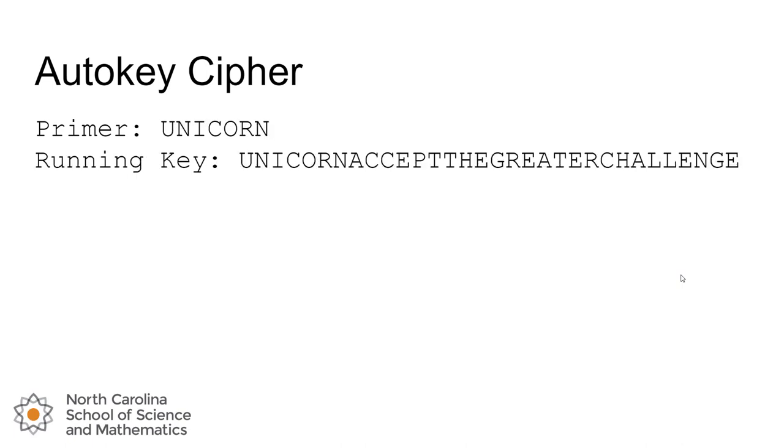We start by taking our primer, and the way that we create our running key is by taking the primer and putting the plaintext on the end. If you're creating the message, you have access to both pieces of information: the primer, which is an agreed-upon secret between you and the receiver, and you are the one that has the plaintext. So you can append that to the end of your primer to create the running key.